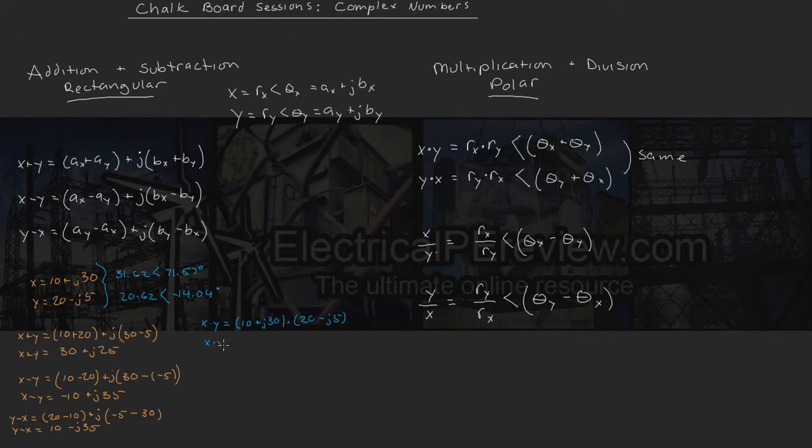So we continue, x times y, x is really 31.62 at an angle of 71.57, y is really 20.62 at an angle of minus 14.04. We multiply our two magnitudes first, and then we add our phase angles, and we get x times y is the same thing as 652 with an angle of 57.53.